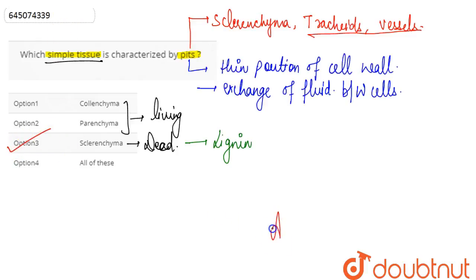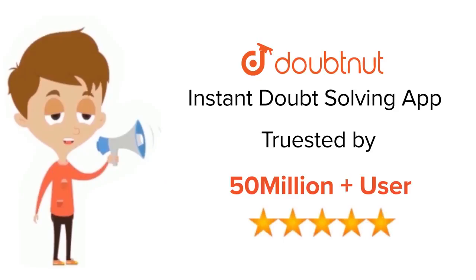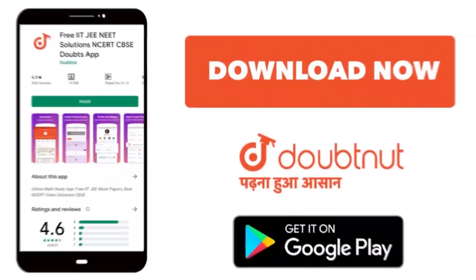That's the correct answer here. Hence option 3 is correct. For class 6 to 12, ITG and NEET level, trusted by more than 5 crore students, download Doubtnet app today.